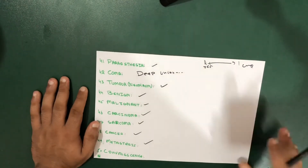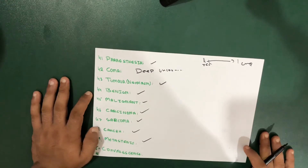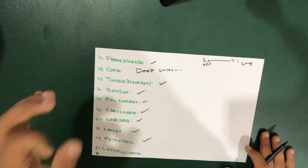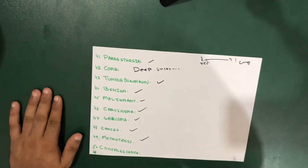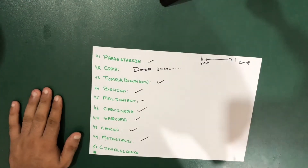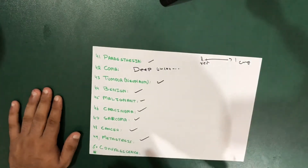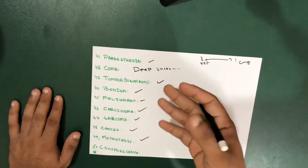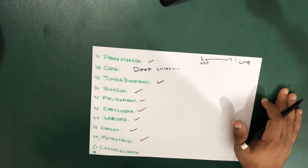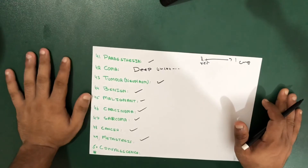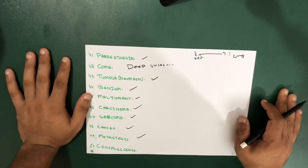So convalescence is the recovery period between the end of a disease and restoration to complete health. This is all about a few basic terms and definitions of clinical anatomy. More videos will be made regarding these basic terms. Please comment and let us know how we can make better videos or if there's any topic regarding medical — or even non-medical — that you'd like to understand.